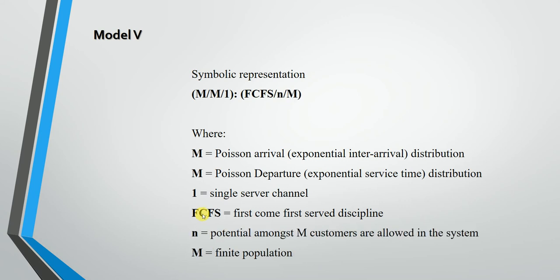Model 5 has the symbolic representation M/M/1:FCFS/N/M. Here, N represents the number of potential customers allowed in the system, and M represents the finite population. Among M customers in the finite population, only N potential customers will be allowed to join the system.